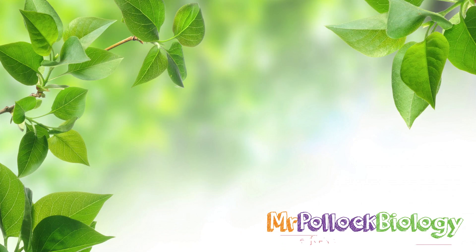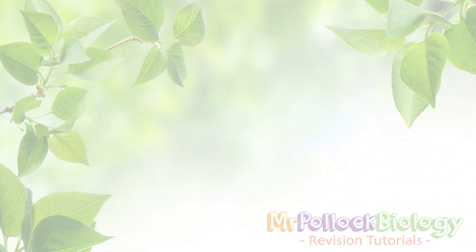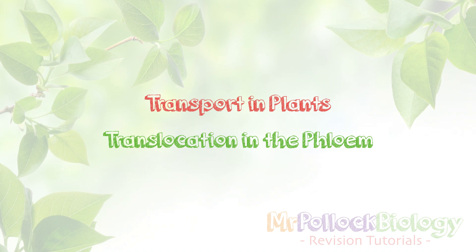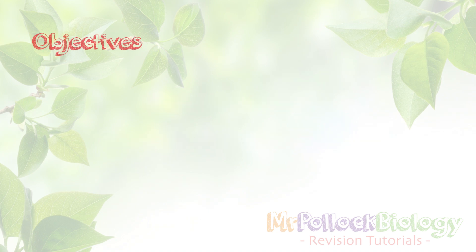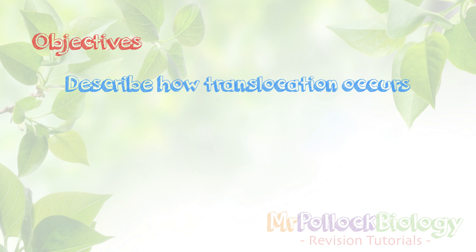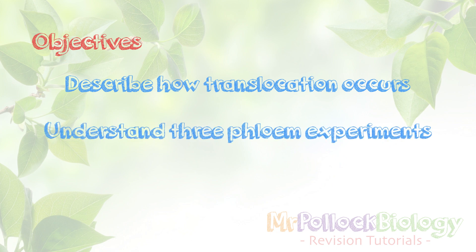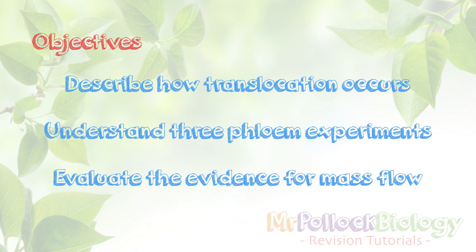Mr Pollack Biology here once again. It's been a while, but now it's time for a new A-level video. This time we're going to be looking at transport in plants — more specifically, translocation, which is how stuff is moved in the phloem. We're going to explain and describe how translocation occurs, understand three phloem experiments that give us evidence for how this process works, and then evaluate the evidence for and against how stuff moves through the phloem.